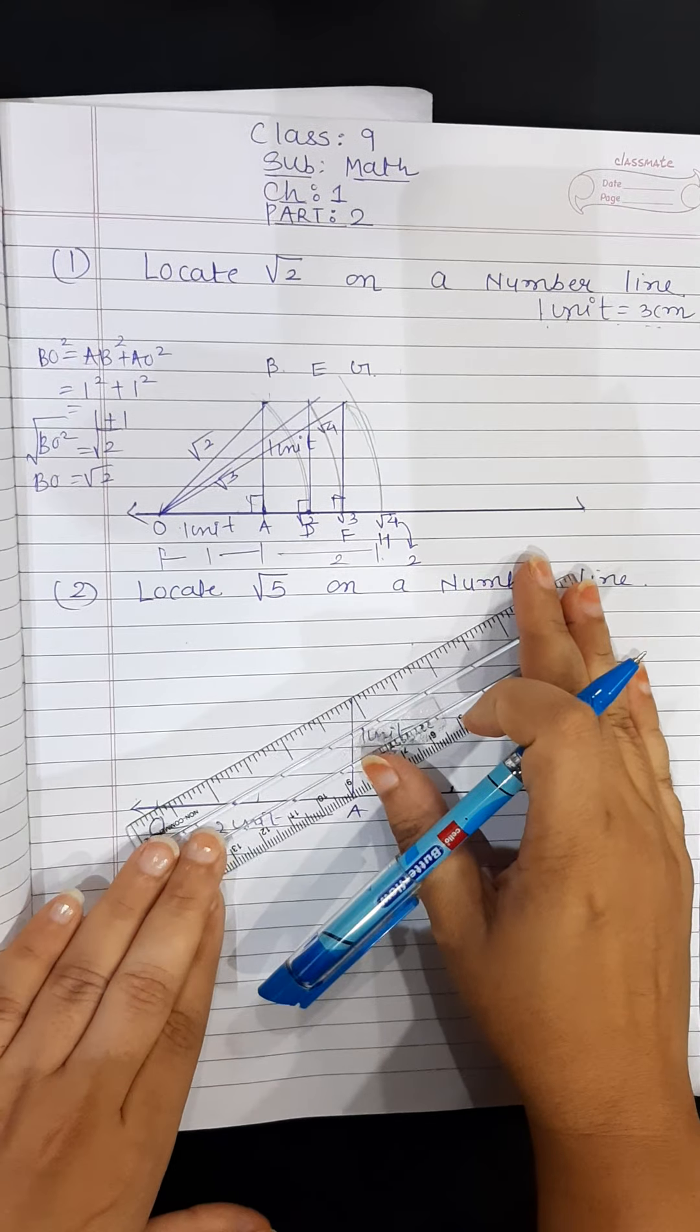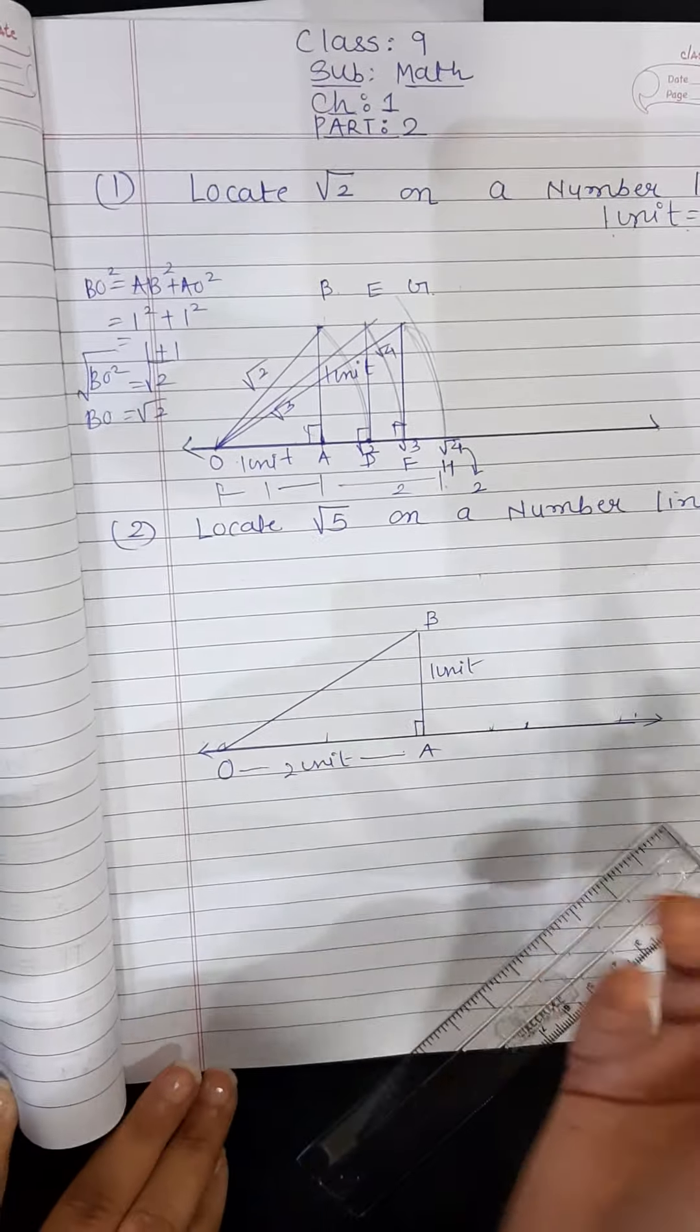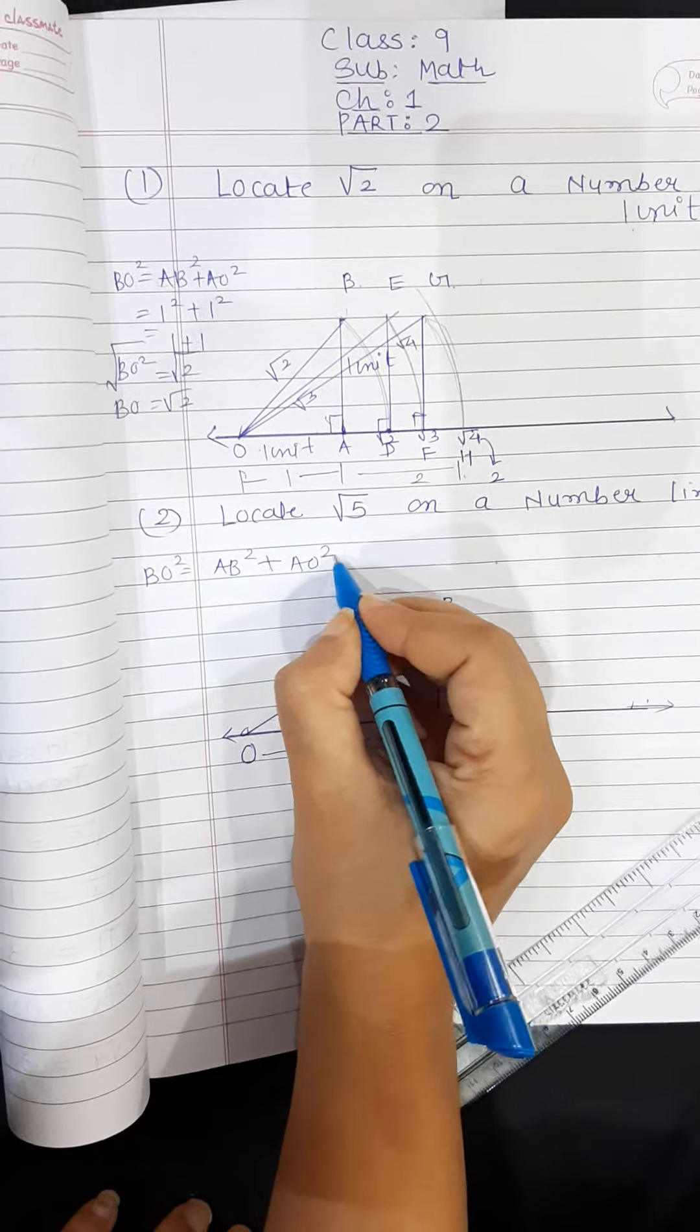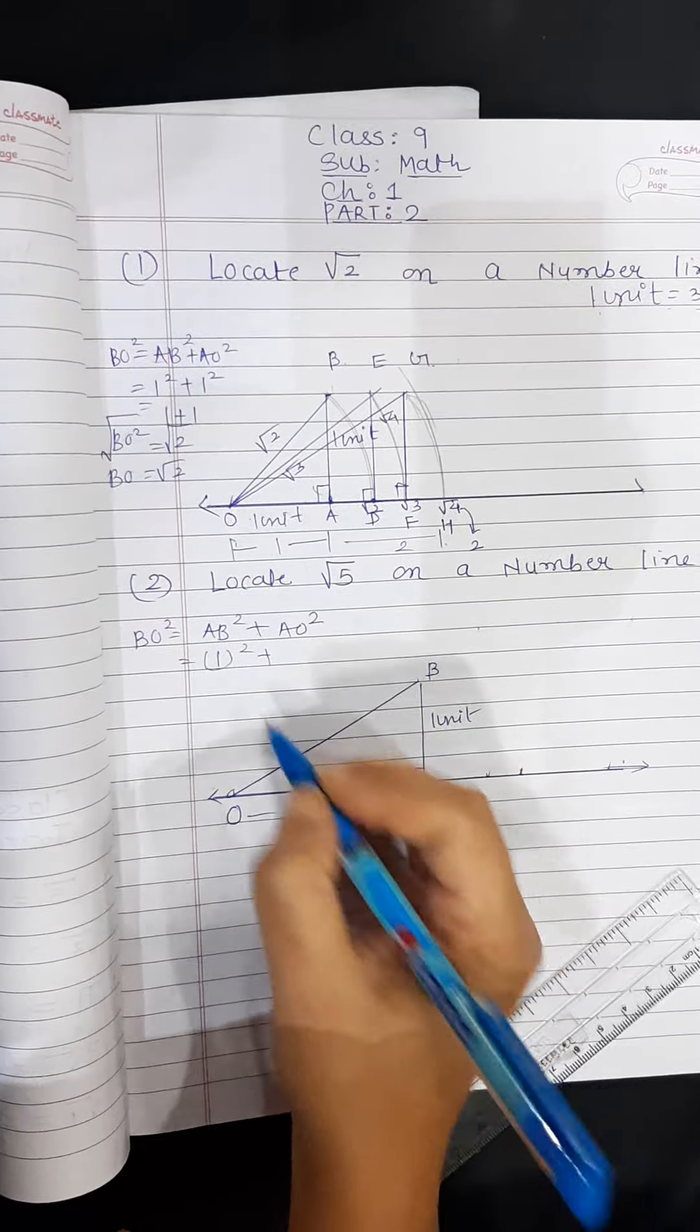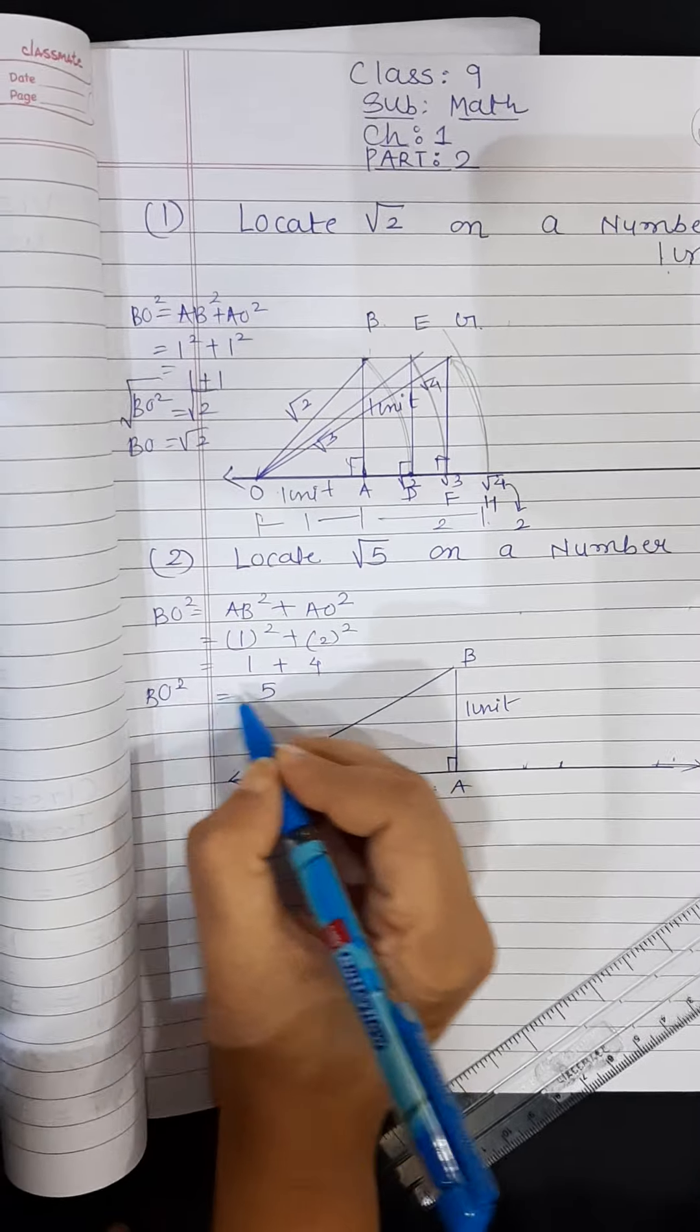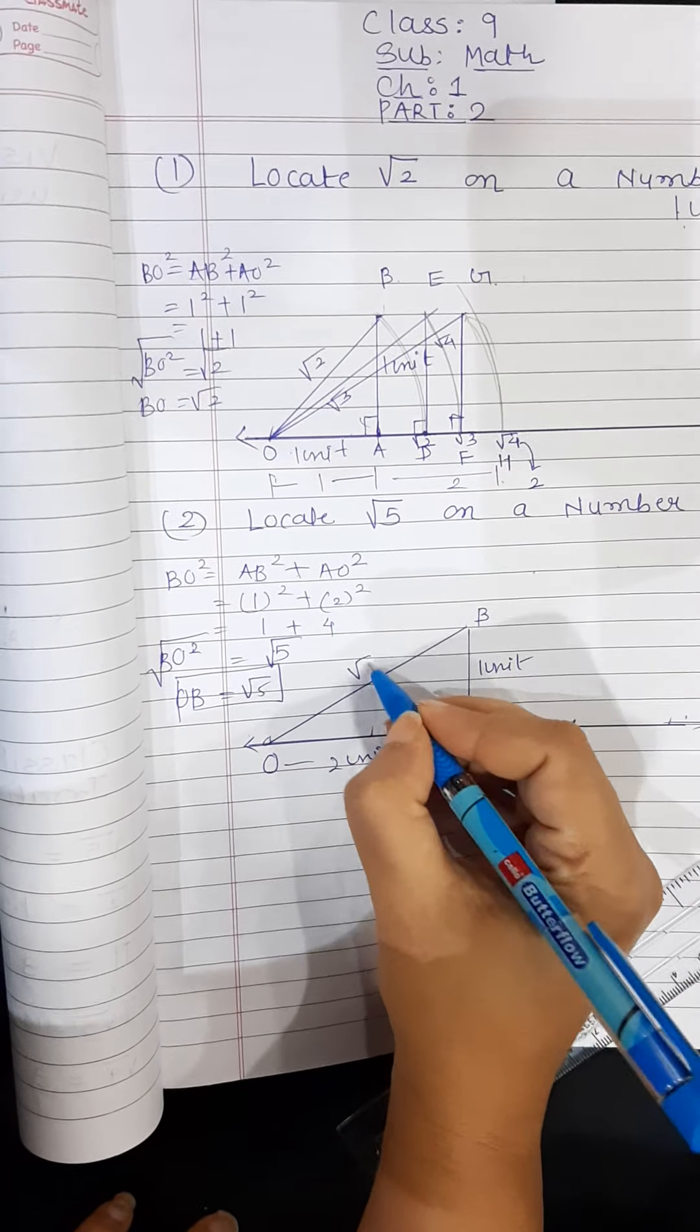Now I will simply join these 2. Now let's perform the Pythagoras again so we can find out what is the BO which is the hypotenuse. So BO square is AB square plus AO square. Now AB is 1 unit, so 1 square, and AO I have taken 2 units which is 2 square. So 1 square is 1, 2 square is 4, which is 5. So BO square is 5. So BO is under root of 5. So I will write root 5 here.